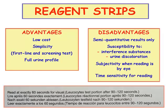The reagent strip has several important advantages: low cost, very simple to use, and used as a first line screening test. It offers a full urine profile — you don't only have the presence or absence of proteins, but also information about hemoglobin and other parameters. However, this method also has disadvantages. It supplies only semi-quantitative results and is susceptible to interfering substances. It is influenced by urine discoloration, and there is subjectivity when reading by eye. There is also time sensitivity for reading, which must be respected as reported on each box from each producer.